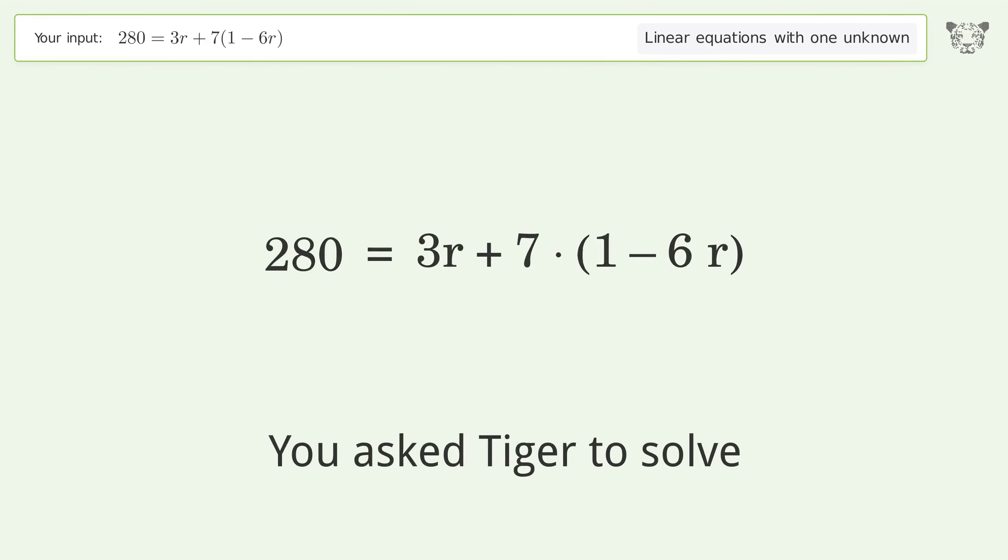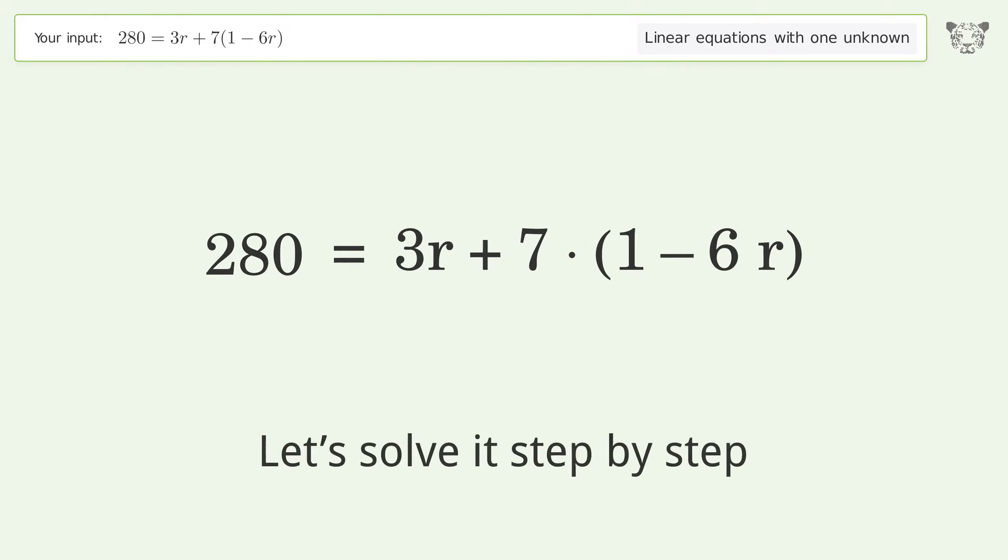You asked Tiger to solve this. It deals with linear equations with one unknown. The final result is r equals negative 7. Let's solve it step by step. Simplify the expression.